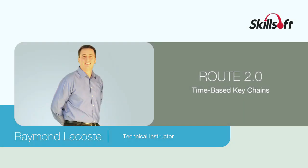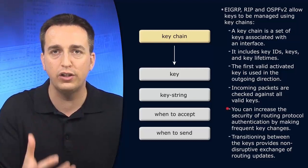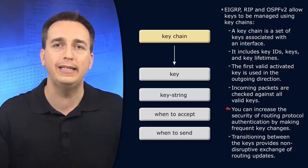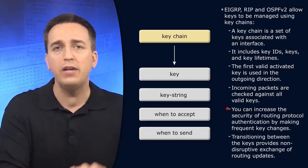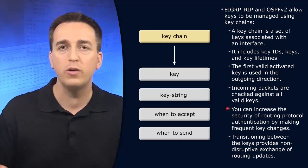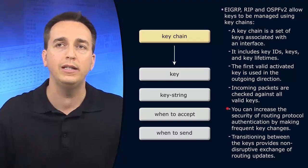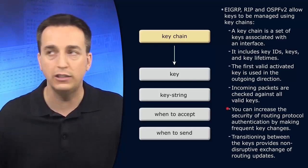If you want to enhance your routing protocol authentication, you can utilize key chains. This enhances security by allowing your devices to use different keys. In January we might use a certain key, in February a different key, in March a completely different key. We rotate through these keys so we are never using the same key for more than so many days or months.